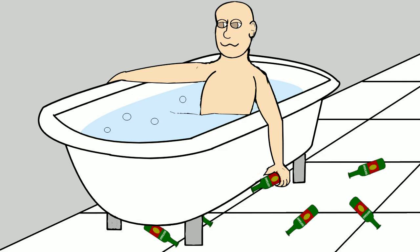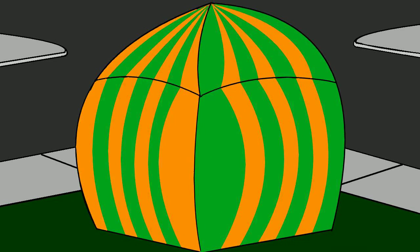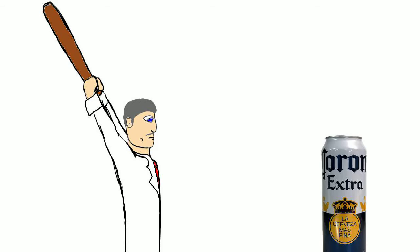Bathe in alcohol to kill all germs, fumigate your house every two to three days, bash your head with a bat to knock out all those germs.